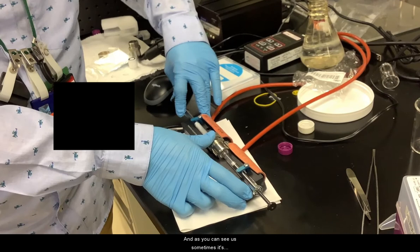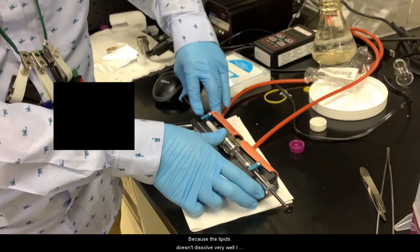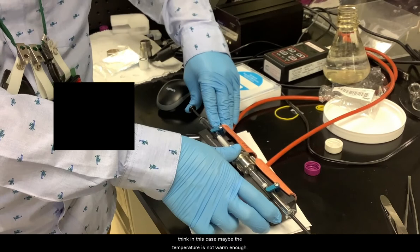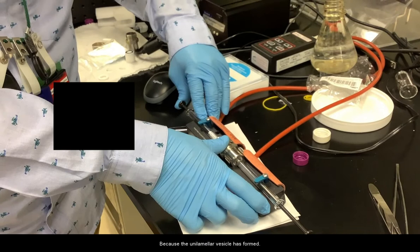As you can see, sometimes you need to use some force to extrude it because the lipid doesn't dissolve very well. I think in this case, maybe the temperature is not warm enough. But once you do it a few times, it's getting better because the unilamellar vesicles can form.